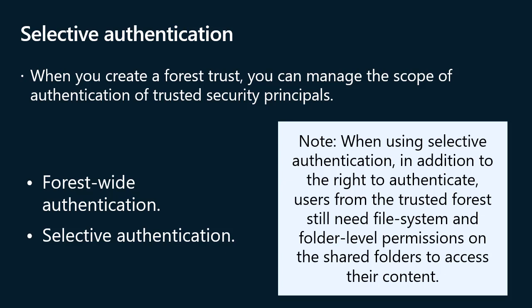For example, if you have a forest trust with a partner organization's forest and want only users from that organization's marketing group to access shared folders on a specific file server, you can configure selective authentication for the trust relationship and then grant those trusted users the right to authenticate only to that one file server. When using selective authentication, users from the trusted forest still also need file system and folder-level permissions on the shared folders to access their content.